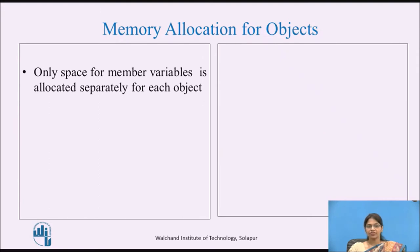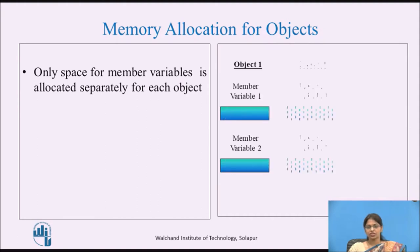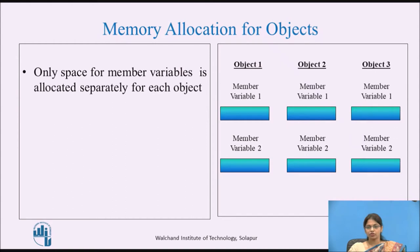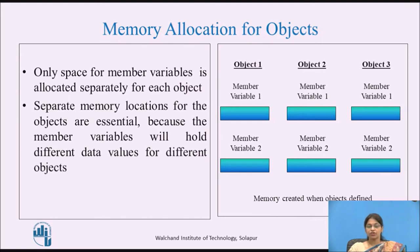Only the space for member variables is allocated separately for each object. As shown here, for object 1, object 2, and object 3, the memory for data member 1 and data member 2 is allocated separately. So the memory is allocated when the objects are defined. Separate memory locations for the objects are essential because the member variables will hold different data values for different objects.